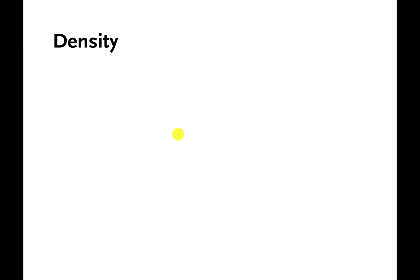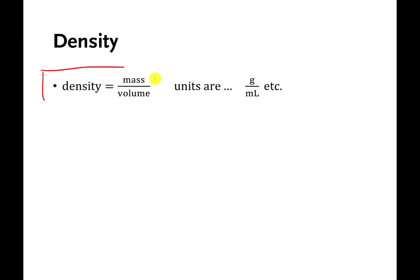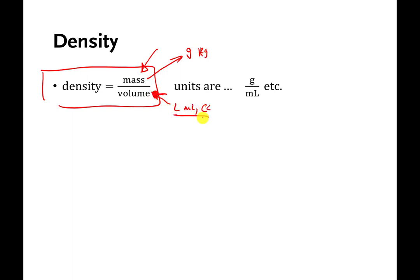Density is a feature that all material objects have. Here is the definition: density is the mass of your material divided by the volume of your material. Mass is pretty close to weight, so basically density is how much something weighs — roughly — divided by how much space it takes up, which is called the volume. Units for mass are usually grams or kilograms in the metric system.